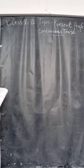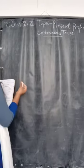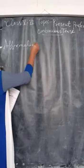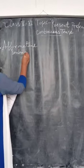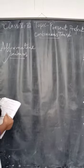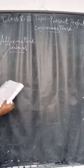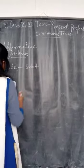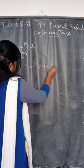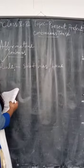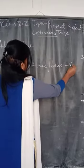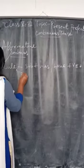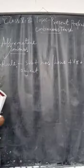Starting with affirmative sentences. The structure of the Present Perfect Continuous Tense in affirmative form is: Subject plus has or have, plus been, plus the present participle (the -ing form of the verb), plus object.